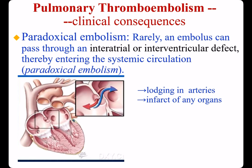There is another kind of embolism: paradoxical embolism. Rarely, an embolus can pass through an interatrial or interventricular defect, thereby entering the systemic circulation and lodging in arteries, leading to infarction of any organ.